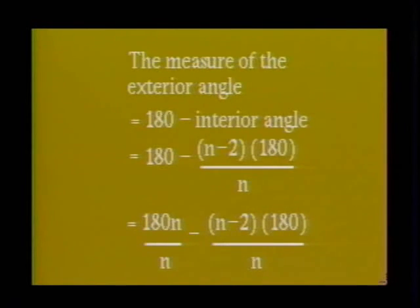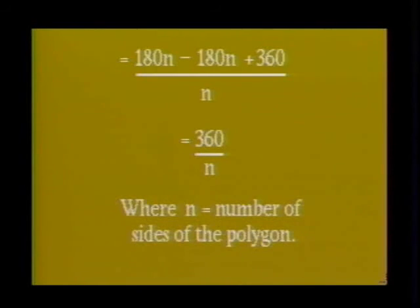Which is equal to 180 minus (n - 2) × 180 divided by n, which equals 180n minus 180n plus 360 all divided by n, which equals 360 divided by n.